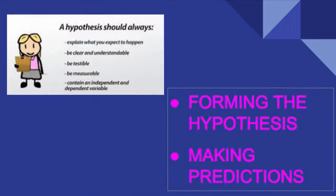Forming hypotheses and making predictions. When a scientist forms a hypothesis, they are making an educated guess to an answer to their question. A hypothesis must be tested to determine if it's correct. Before testing, a scientist will usually make a prediction about what will happen in the investigation. In making a prediction, a scientist will take trustworthy details they have read or previous knowledge they may have, and use those details to support what they think will happen next.